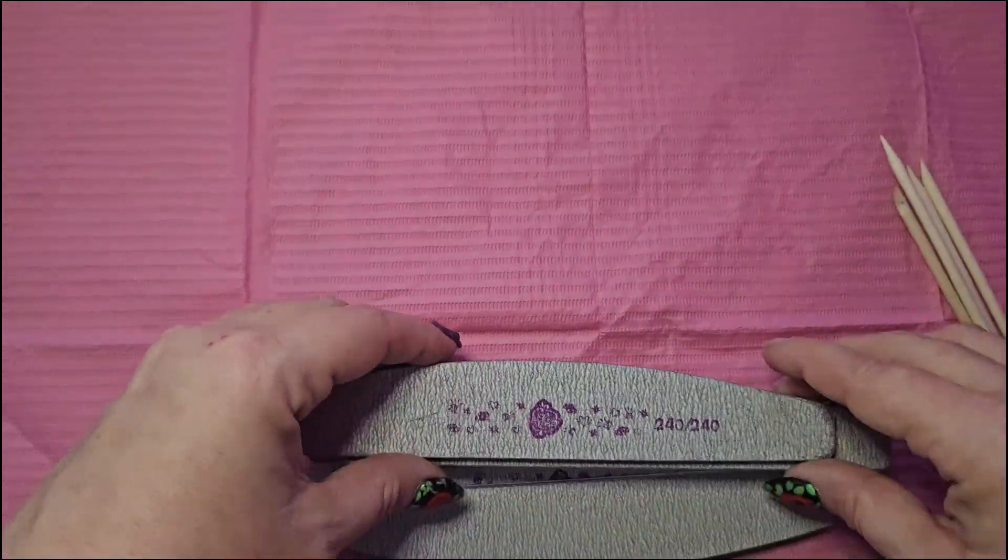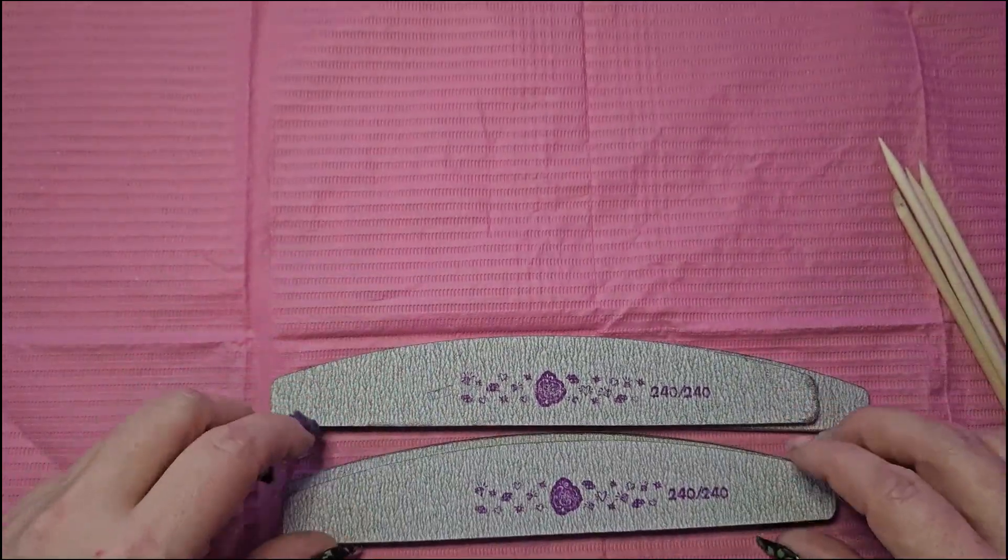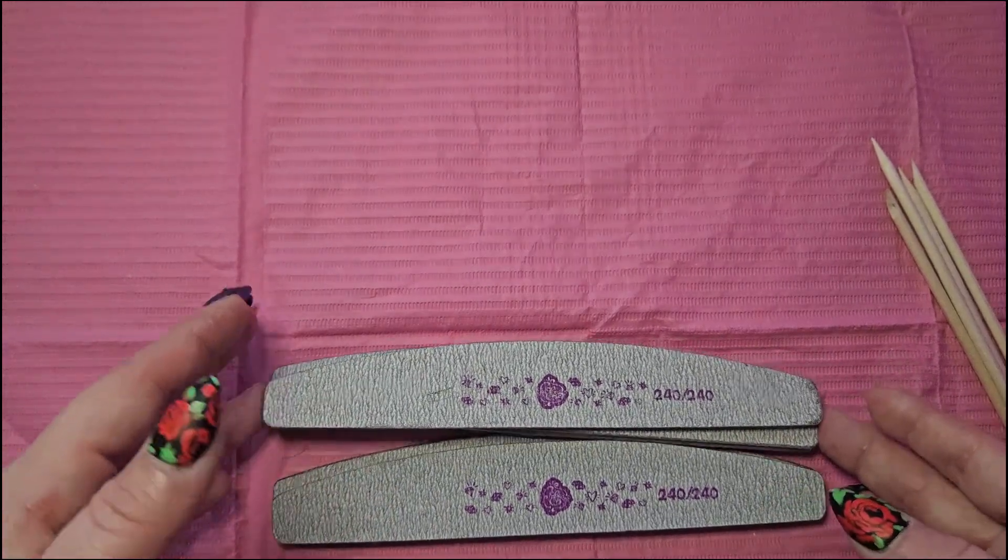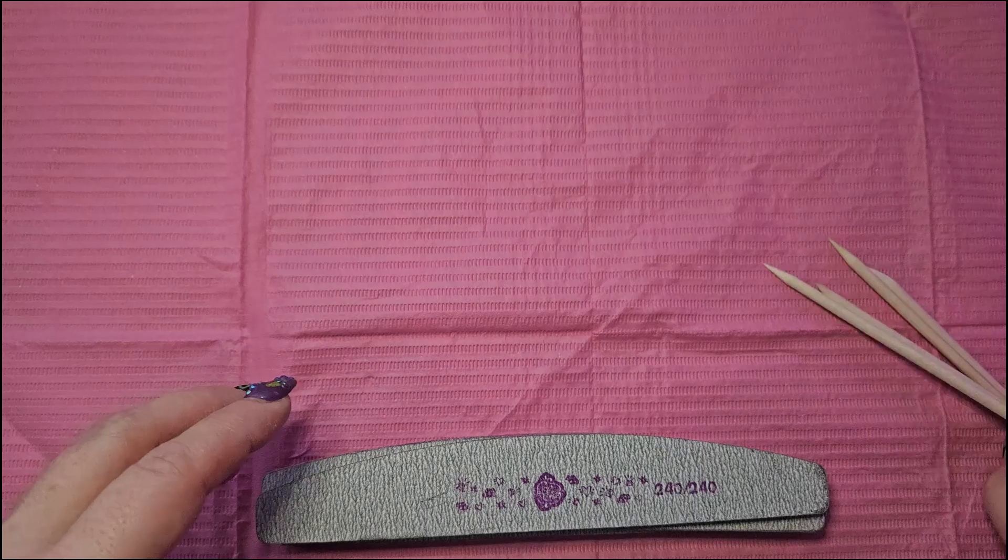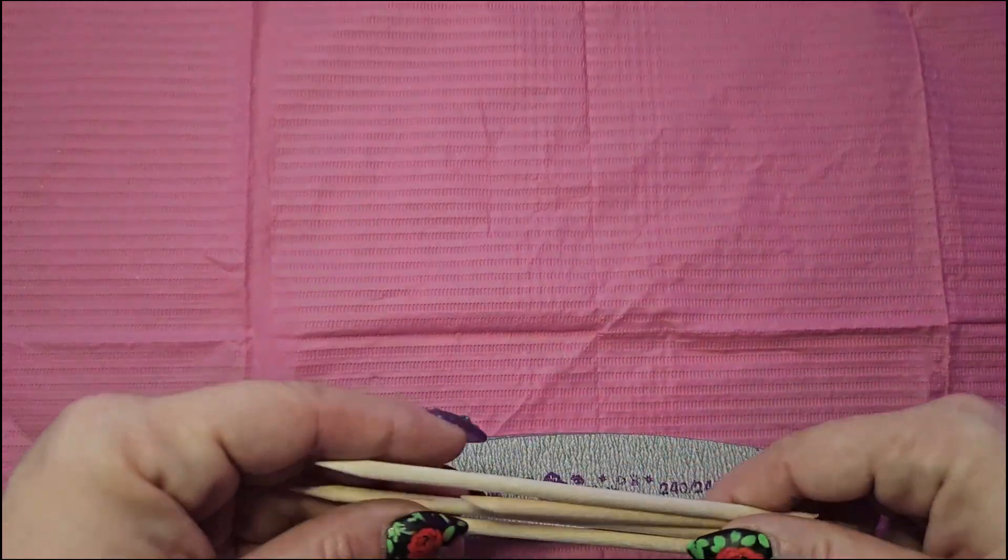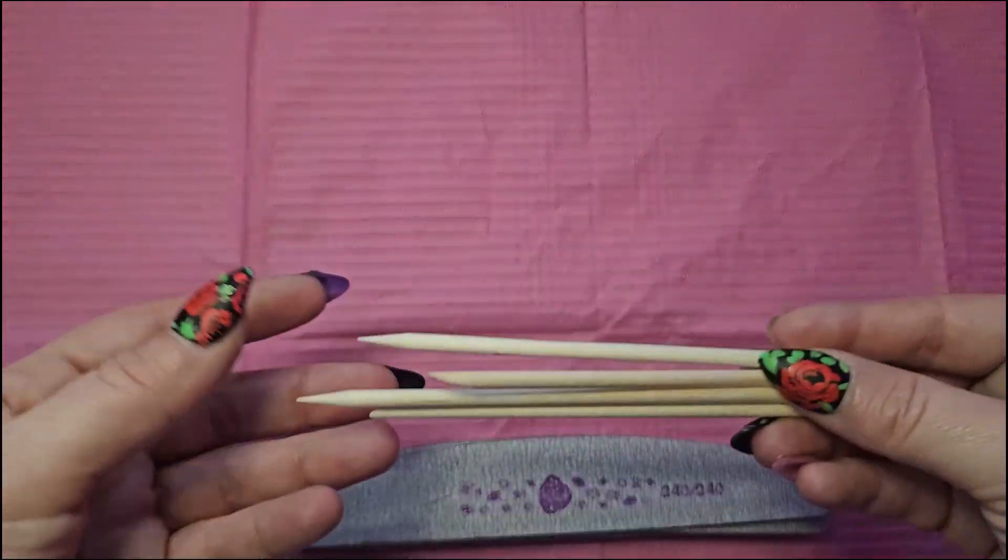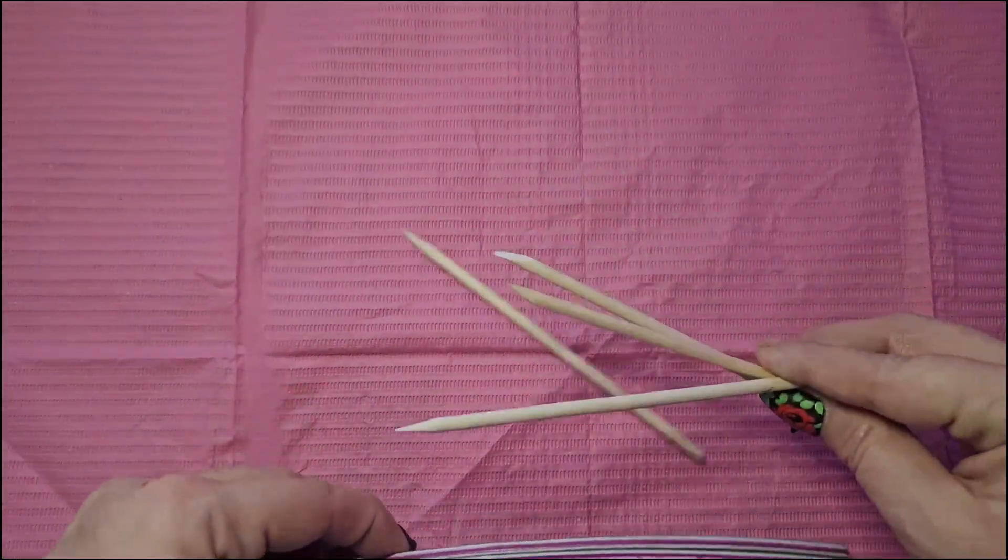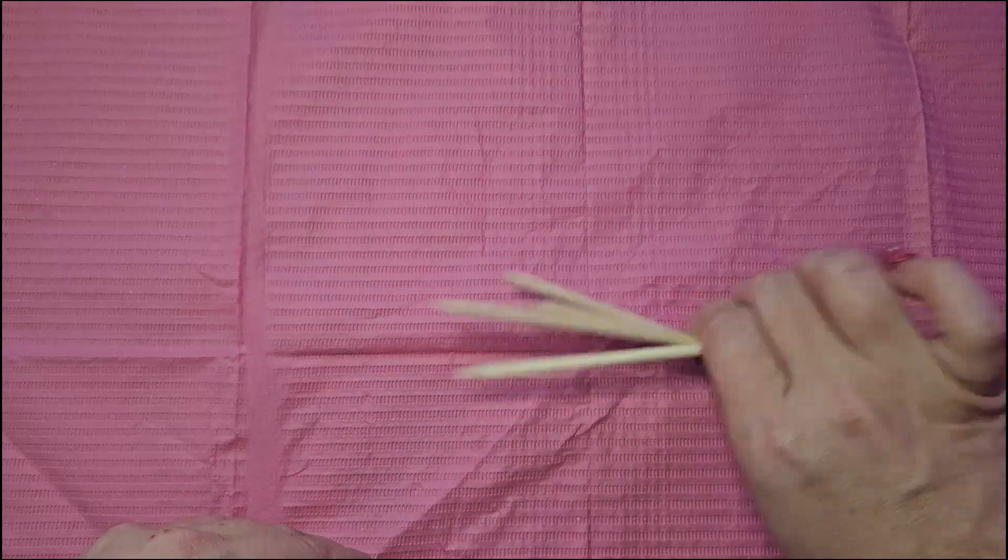Starting off with some nail essentials, I got four of the 240 over 240 grit nail files in the crescent half moon shape. I also got four of the orange wood sticks or cuticle pushers. I have gotten these in my last scoop boxes. It's great to have extra on hand.